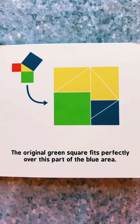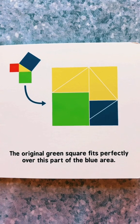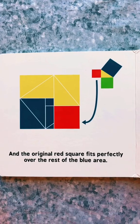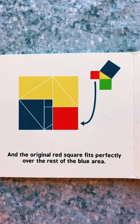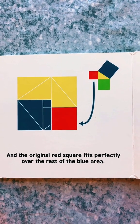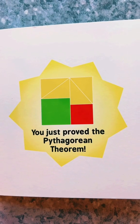The original green square fits perfectly over this part of the blue area. And the original red square fits perfectly over the rest of the blue area. You just proved the Pythagorean theorem.